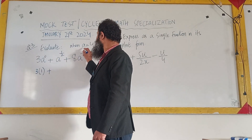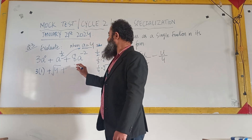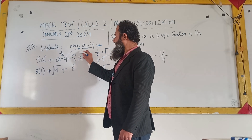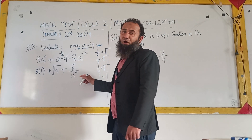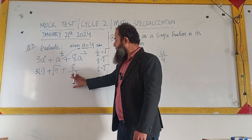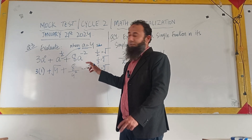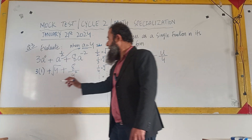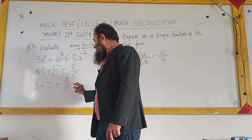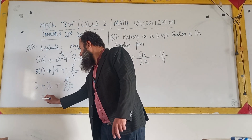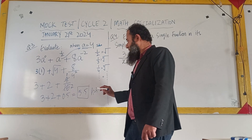Since a equals 4, we substitute that value. We apply the square root where the index is 1/2. To convert the negative index to positive, we shift a raised to the power minus 2 into the denominator. Substituting a equals 4 gives 4 power 2 in the denominator. The square root of 4 is 2, and 4² is 16, so we get 3 times 1 plus 8/16, which simplifies to 3 plus 2 plus 0.5, giving a final answer of 5.5.